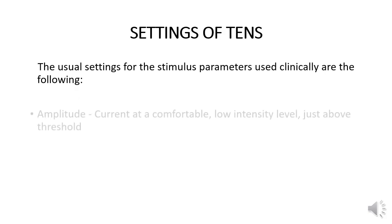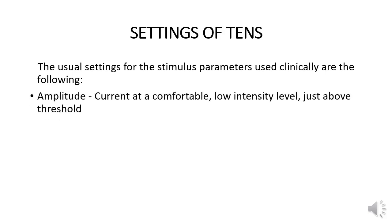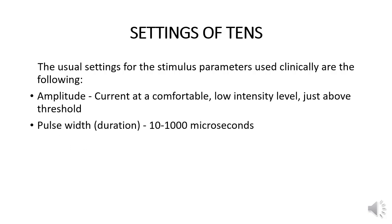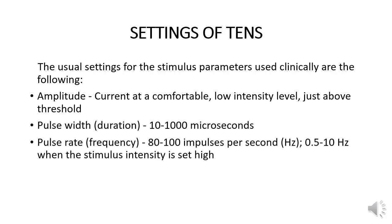The usual settings for the stimulus parameters used clinically are: amplitude current at a comfortable low intensity level just above threshold; pulse width duration of 10 to 1000 microseconds; and pulse rate frequency of 80 to 100 impulses per second (Hertz), or 0.5 to 10 Hertz when the stimulus intensity is set high.